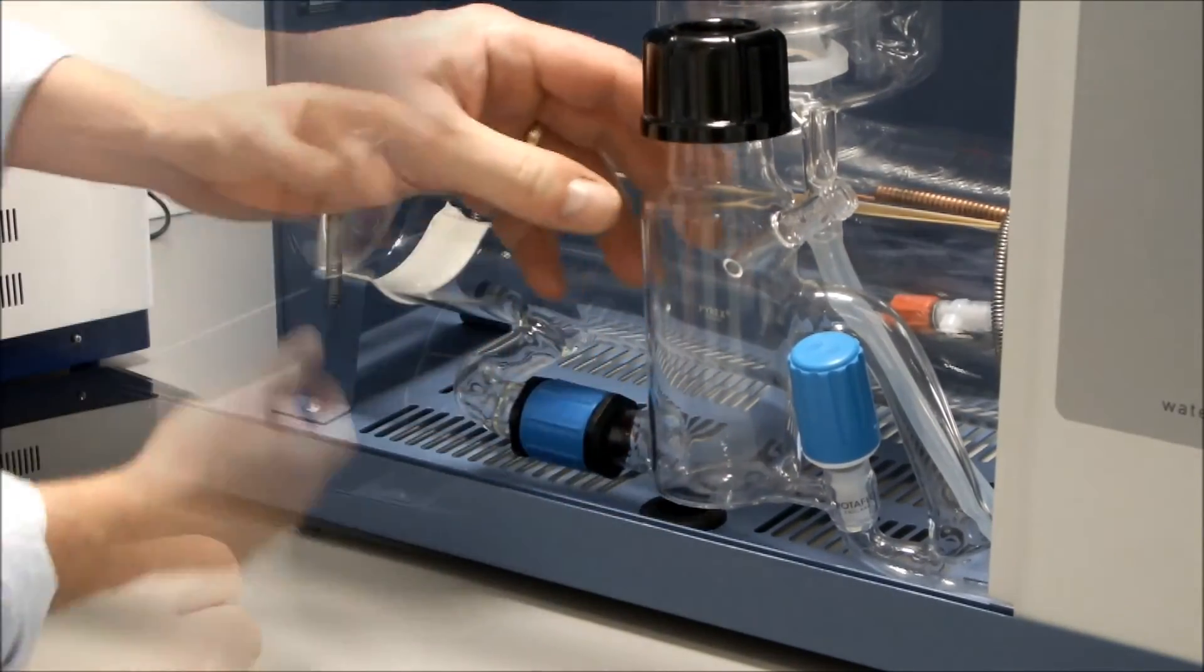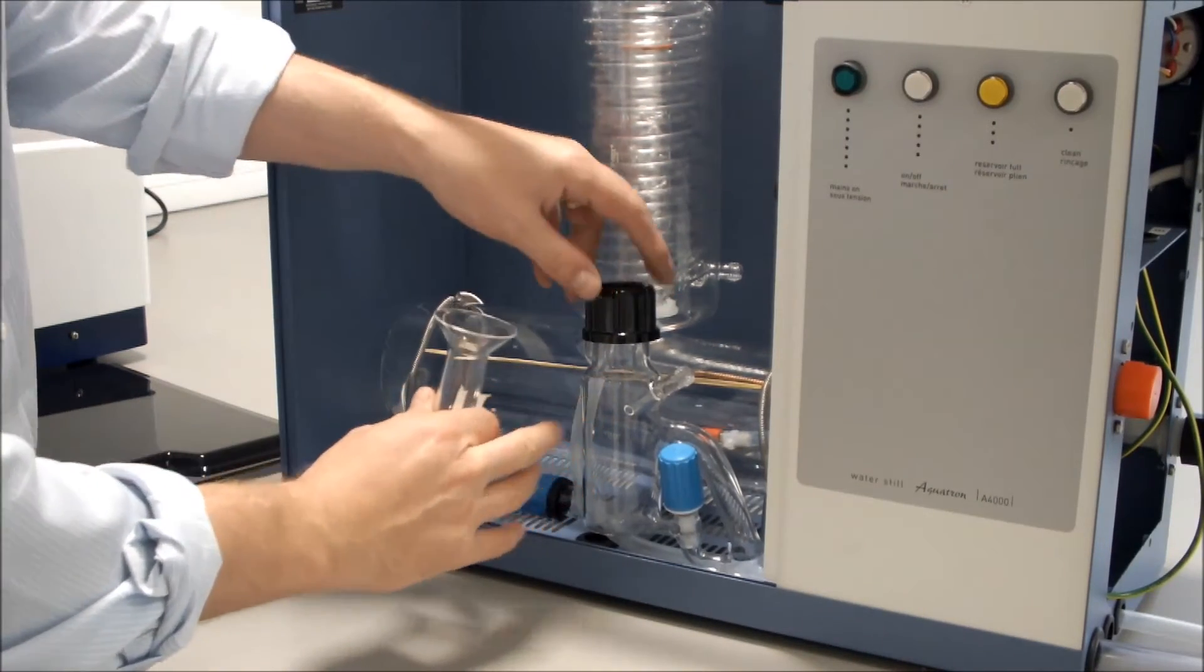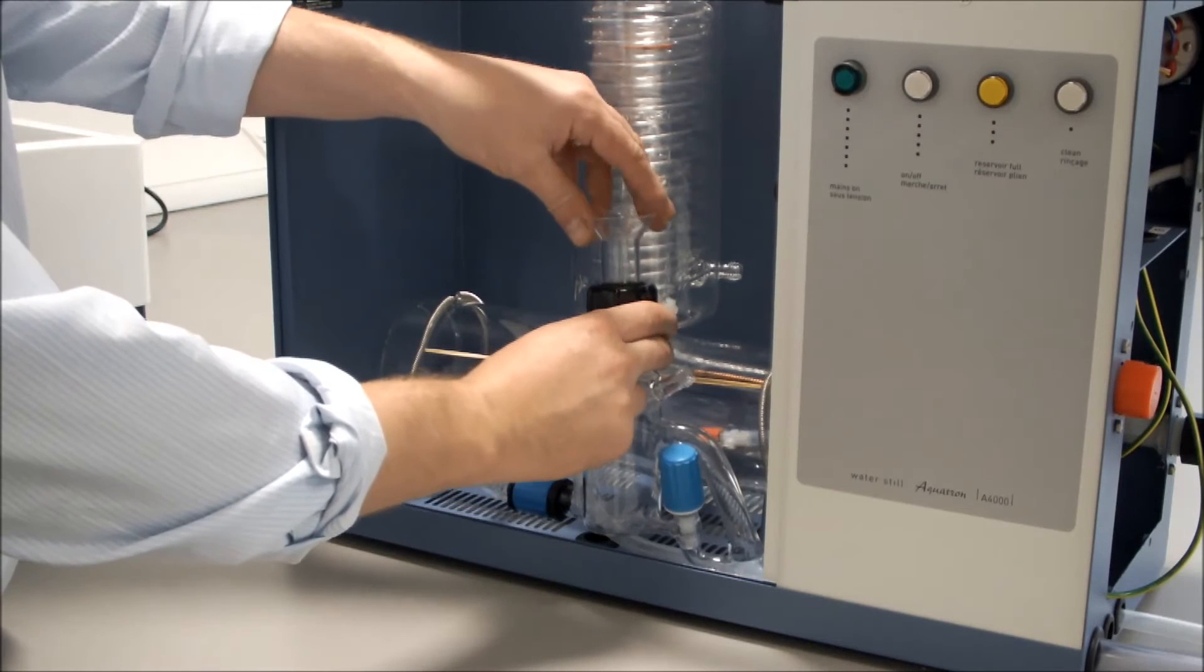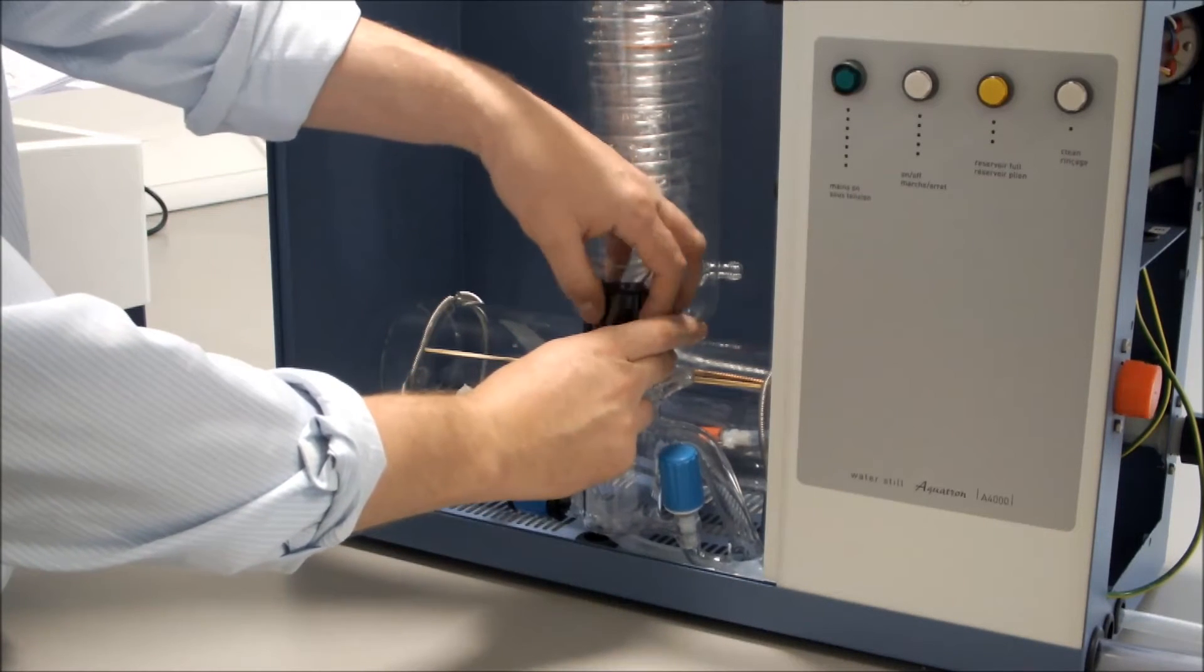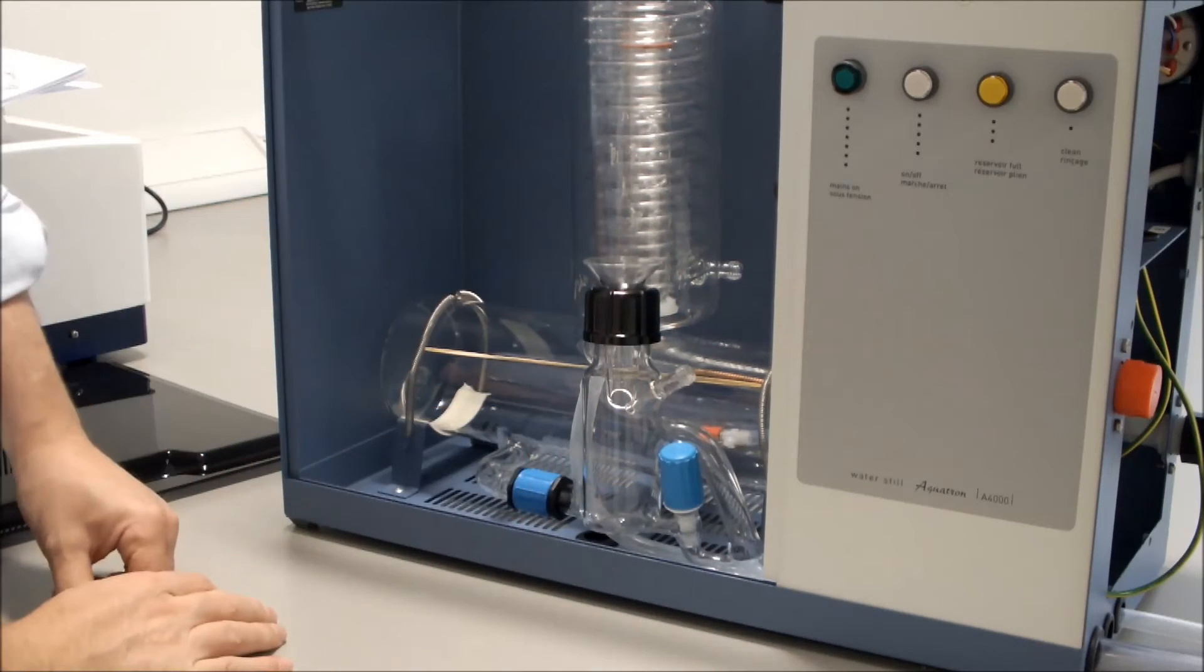Next thing to do is to connect our funnel into our boiler level control. We just ease the black cap off slightly, press that in, and we tighten up.